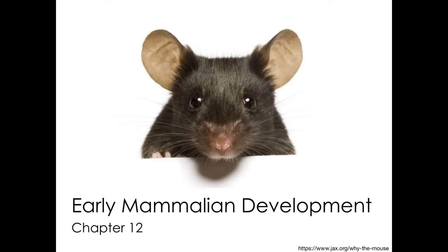In the previous lecture, we began discussing some aspects of mammalian development. We saw how in mammals, cleavage happens more slowly compared to other organisms, and it involves asynchronous cell divisions. Today, we'll begin by looking at the features of mammalian gastrulation before we discuss the mechanisms involved in axis specification.